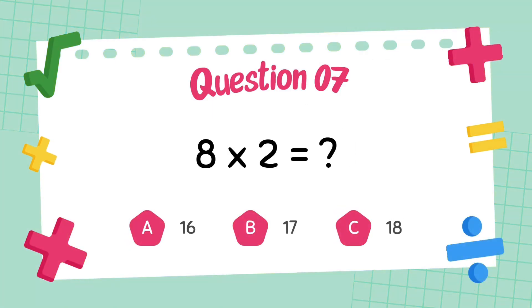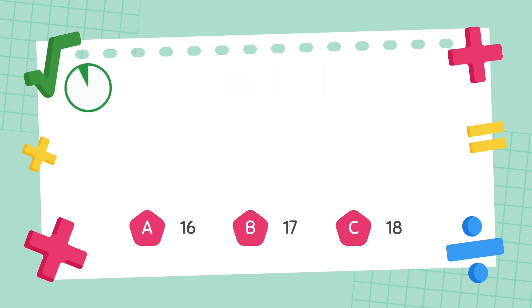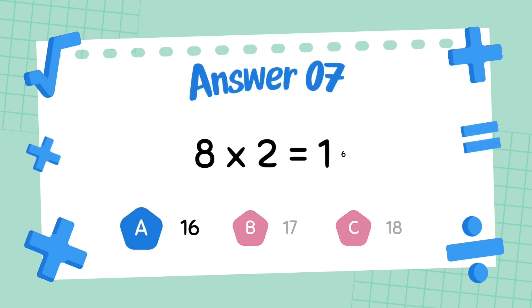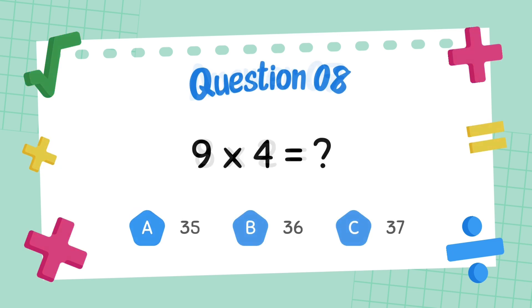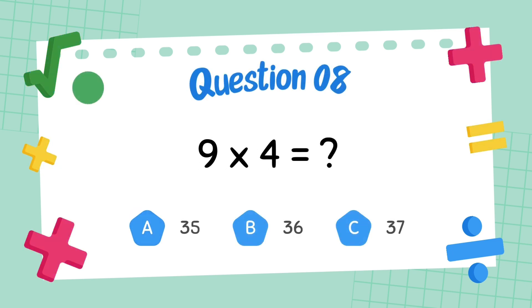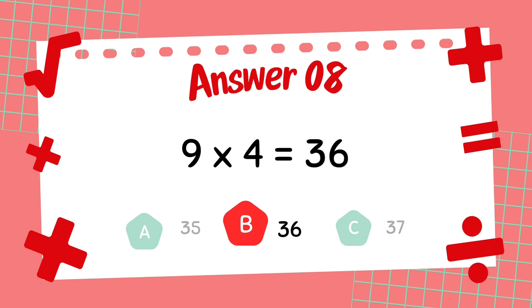What is 8 multiply 2? The answer is 16. What is 9 multiply 4? The answer is 36.